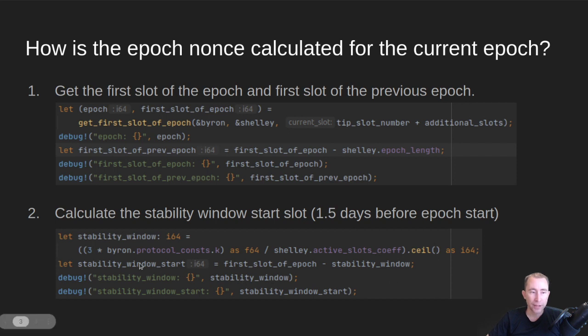And then we need to figure out where the stability window start is. And that's where we go back to that first slot of the Epoch. And then we subtract 1.5 days worth of slots off of that. So we're looking at the spot in the previous Epoch where we know that the blocks are no longer going to change.